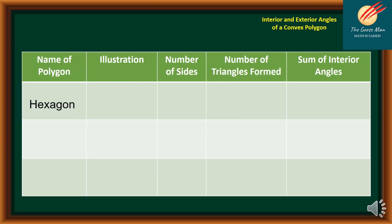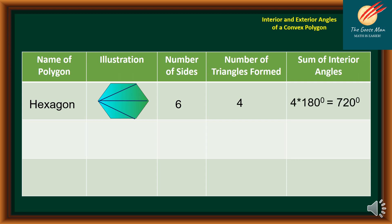If I have a hexagon, it means I have six sides. I can draw three diagonals, which means I have four triangles formed. In order to find the sum of the interior angles, I have 4 times 180, which is equal to 720 degrees.